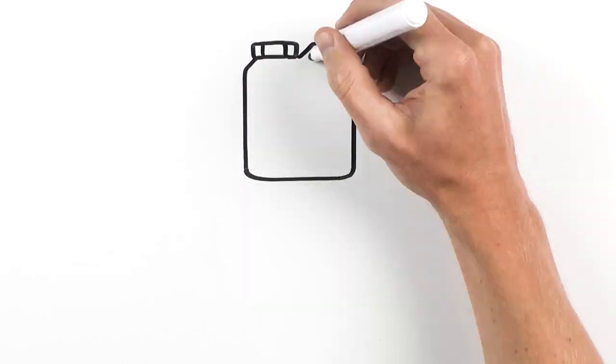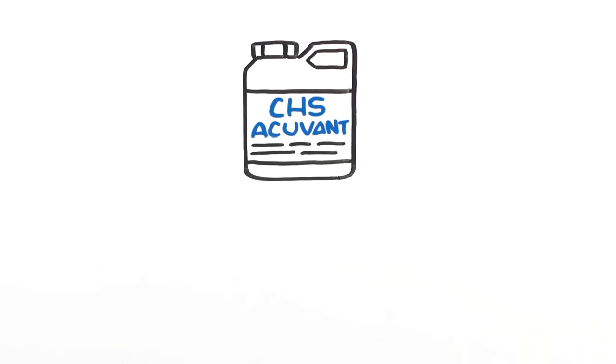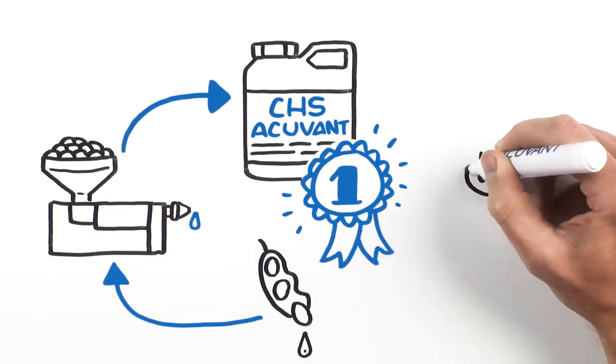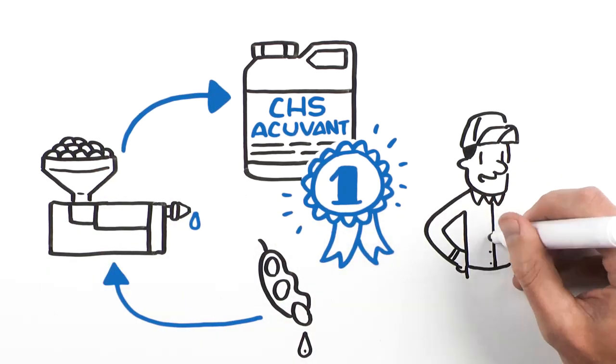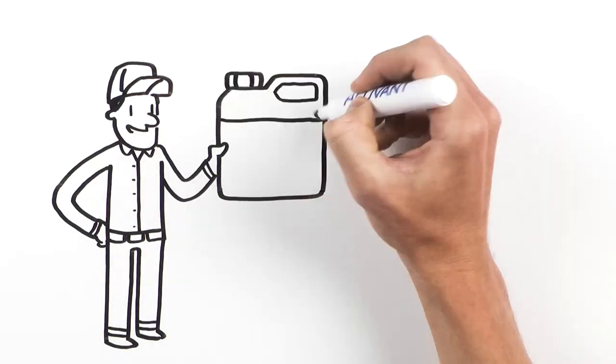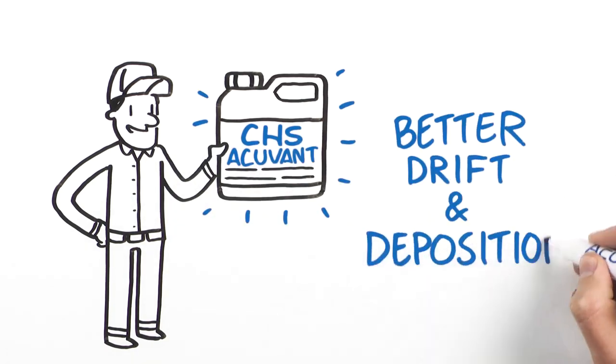Finally, because CHS Acuvant is part of an exclusive new line of high-performance adjuvants formulated with oil from soybeans grown by farmer owners and refined by CHS, you're participating in the value chain. You can take pride in your role in creating a better drift and deposition adjuvant.